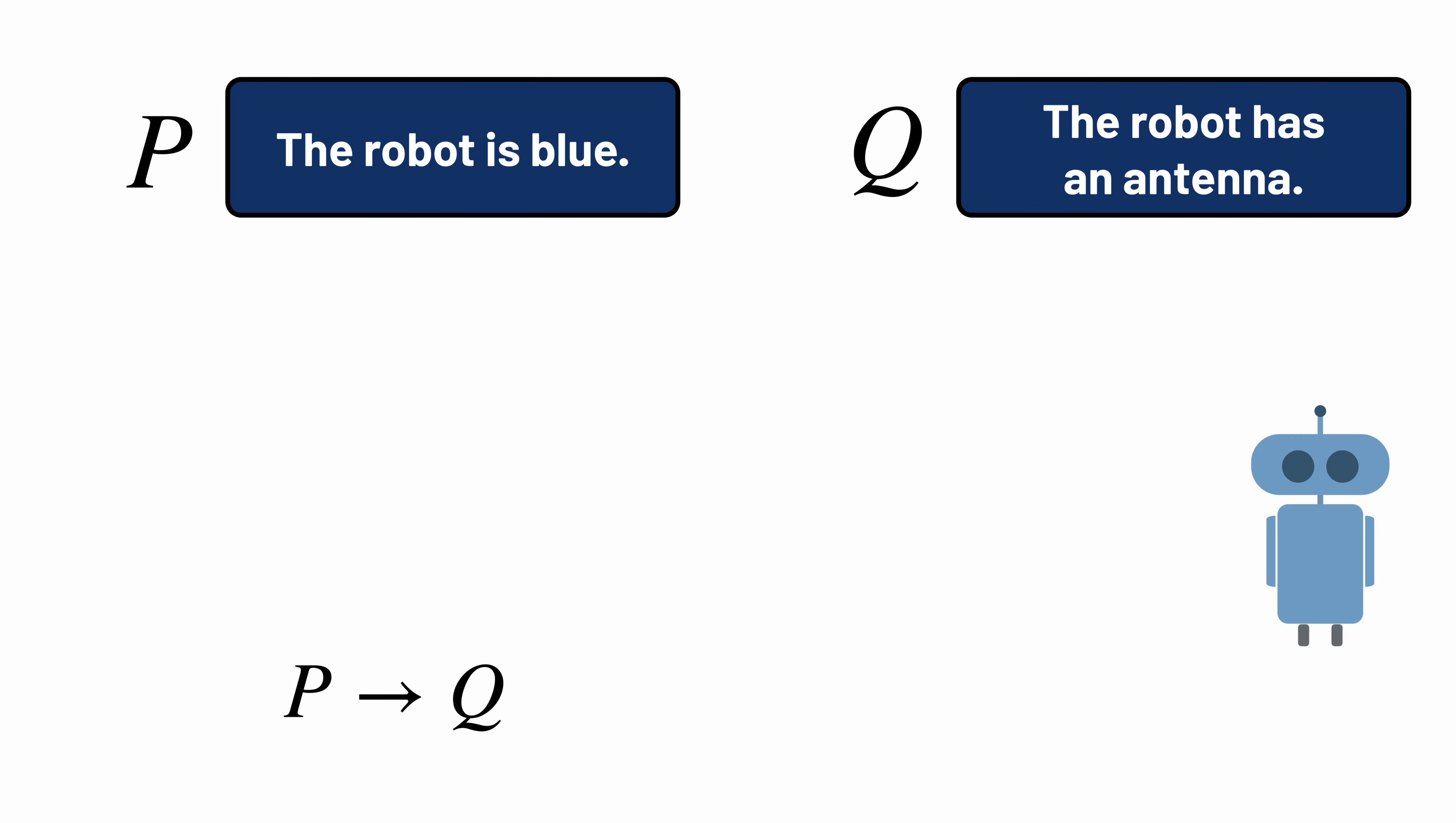So for this robot, it's blue, and it has an antenna, so P implies Q is true. But for this robot, it's blue, but it has no antenna, so P implies Q is false here. For it to be true, the fact that the robot is blue would have to imply that the robot has an antenna.